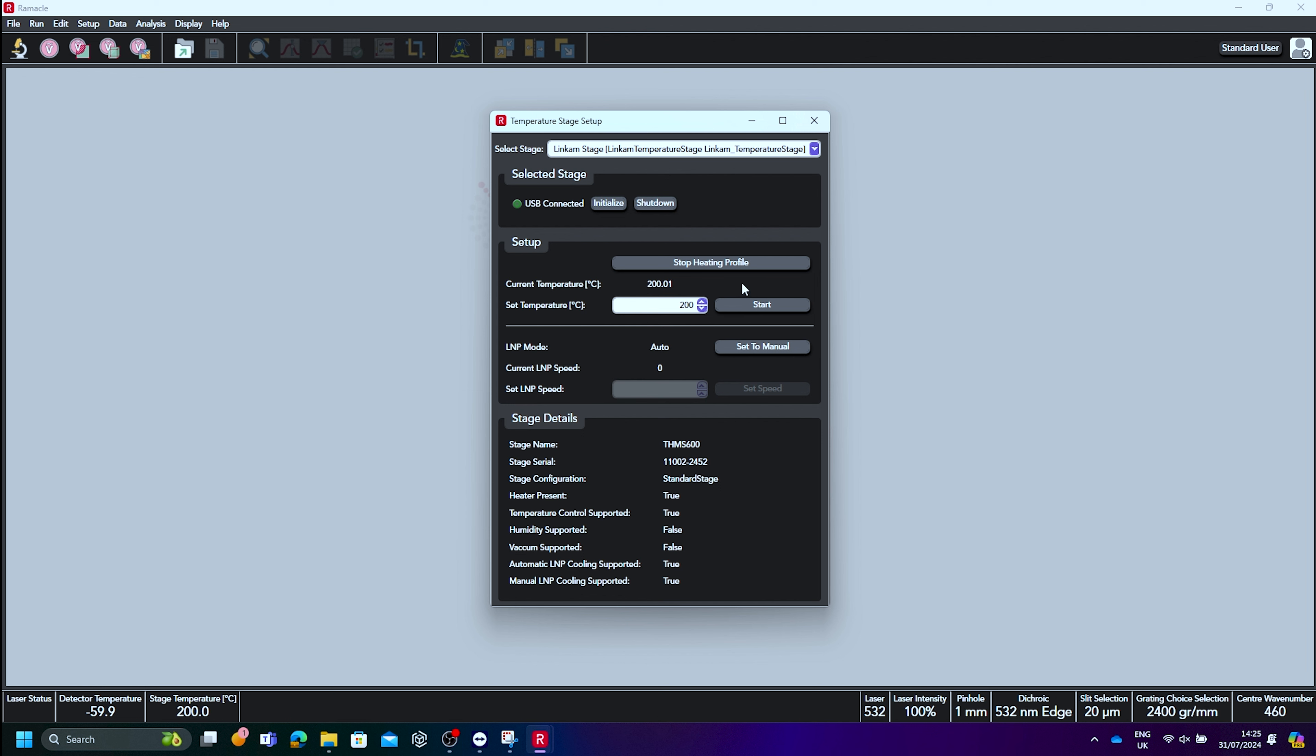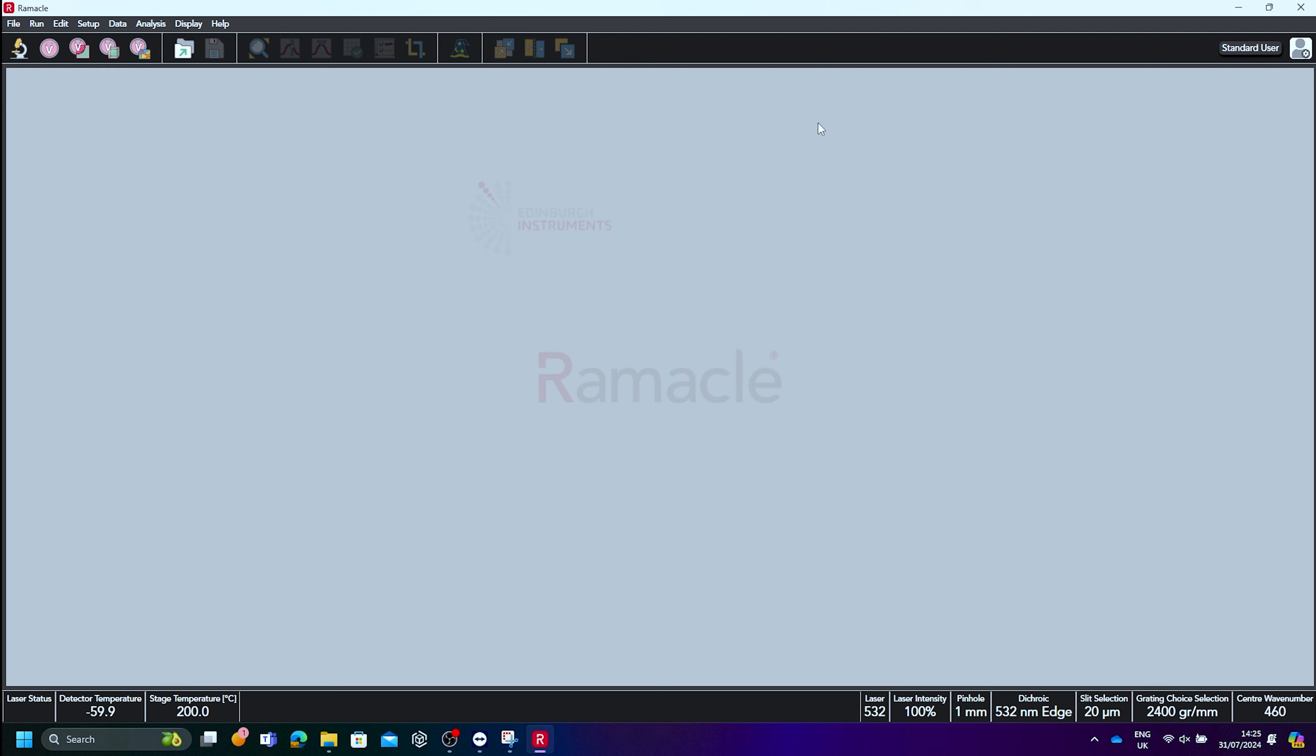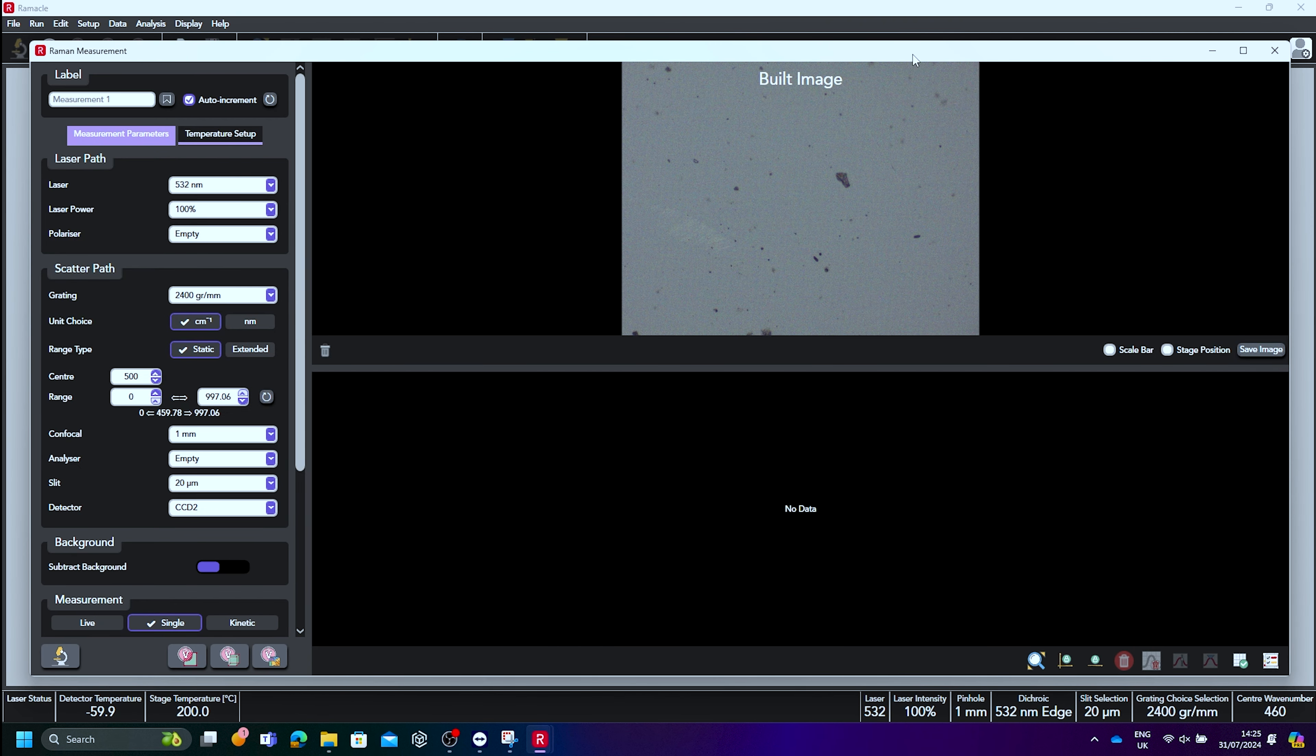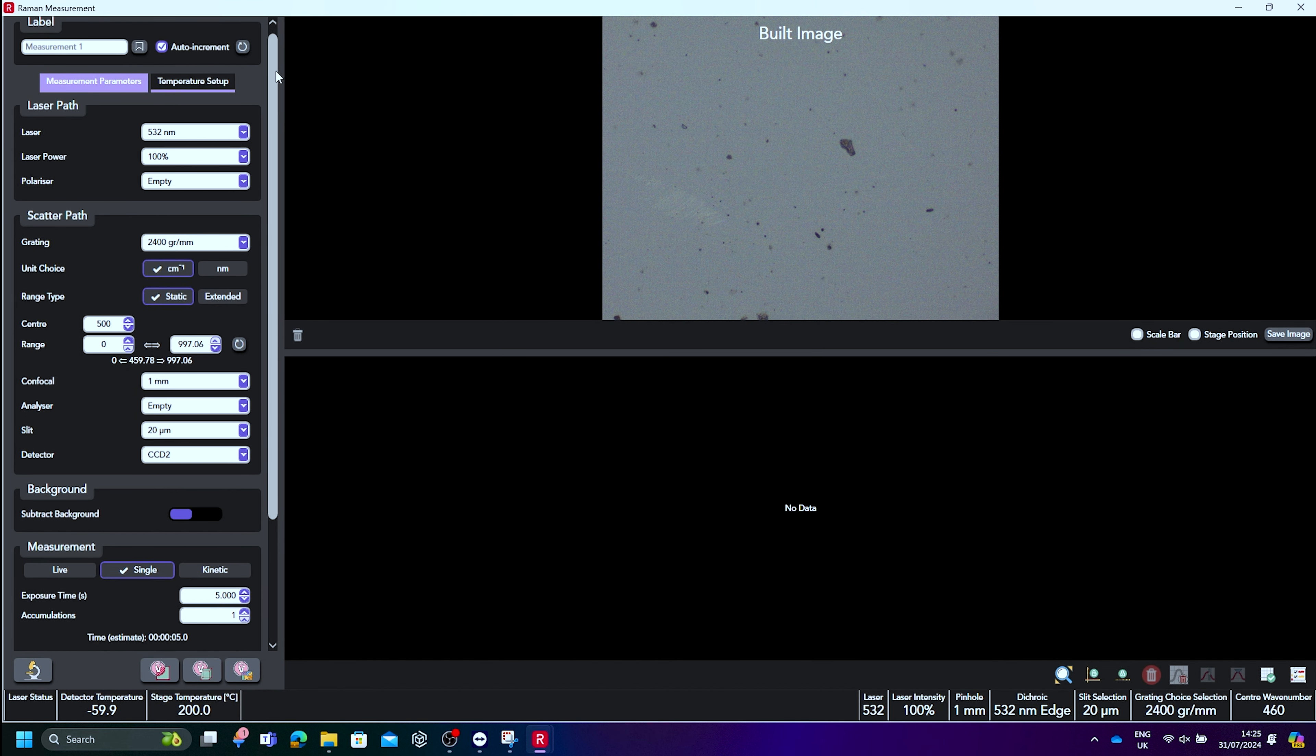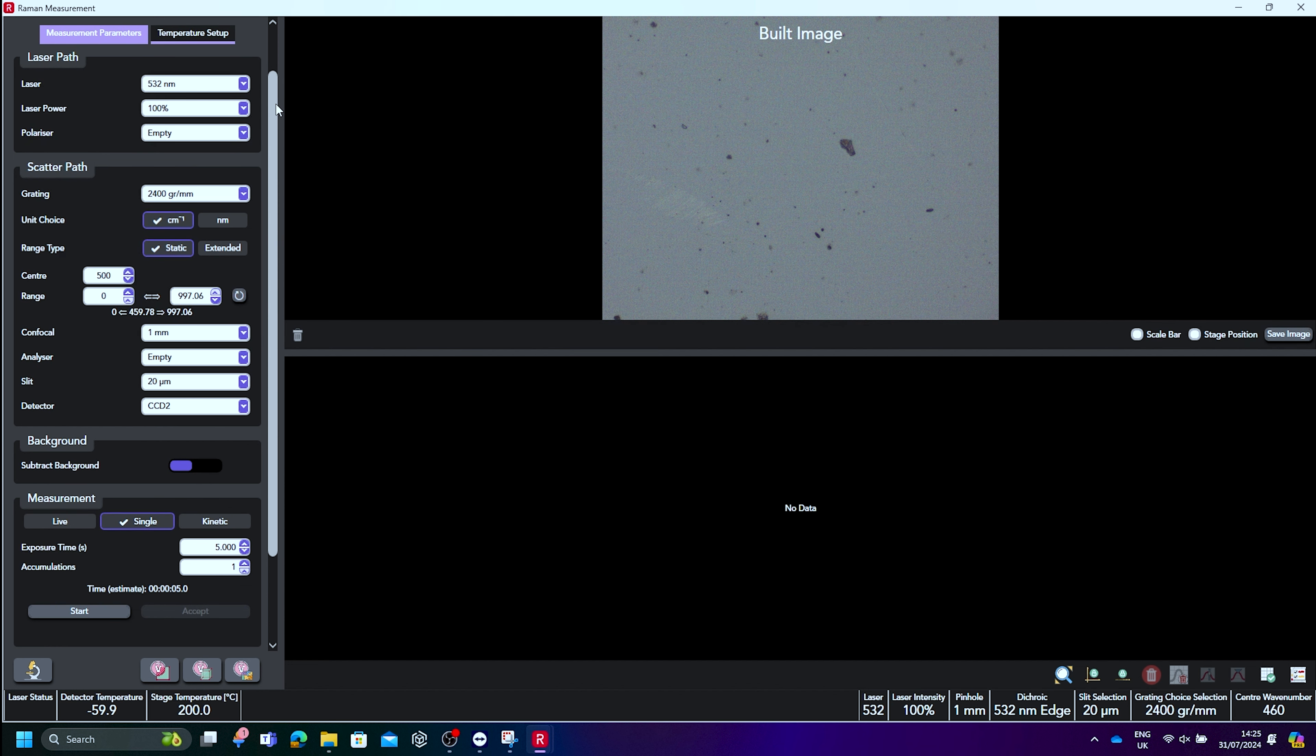In the Raman measurement window, we can now set up a temperature scan. Our measurement parameters have been preset, but we will use a 532 nanometer laser and a high groove density diffraction grating in order to obtain high resolution spectra of our silicon chip. We can also alter the range so that only the phonon mode of interest is being analyzed.